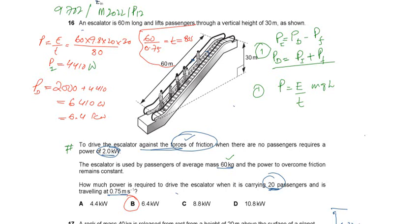Then how to calculate the time? We know the distance is 60 meters. We know the speed is constant. Speed equals distance upon time, so time equals distance upon speed. Distance is 60 and speed is 0.75, so time will be 80 seconds.